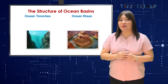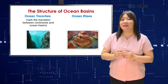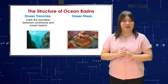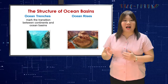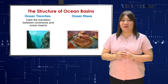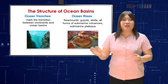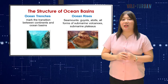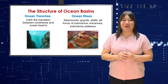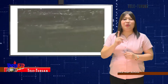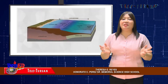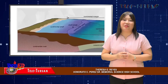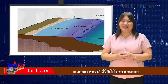Ocean trenches are long, narrow, steep-sided depressions found on the ocean floor that contain the greatest depths in the ocean. They mark the transition between continents and ocean basins, especially in the Pacific basin. Ocean rises include seamounts such as guyots, atolls, and all forms of submarine volcanoes and submarine plateaus. Now you know that ocean basins are the largest depressions on Earth.